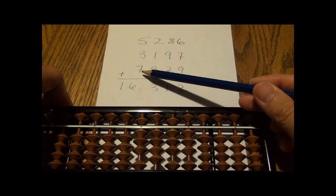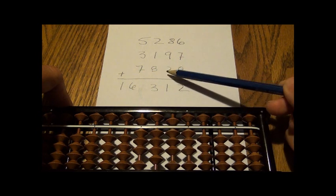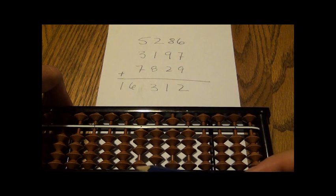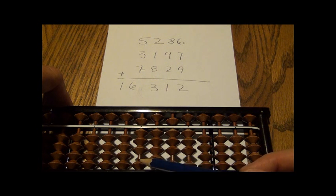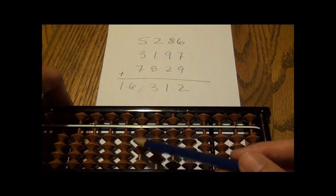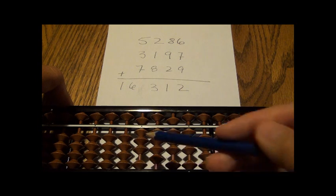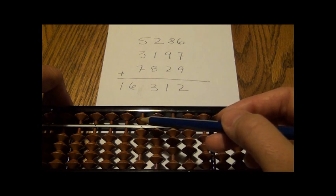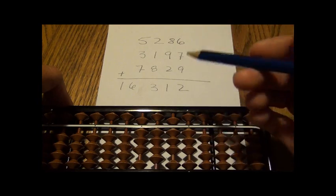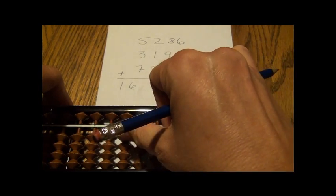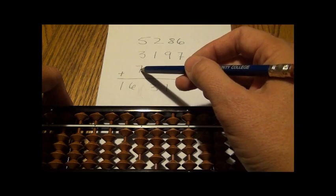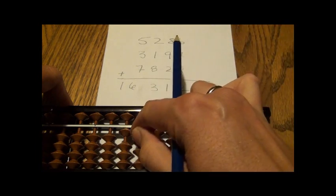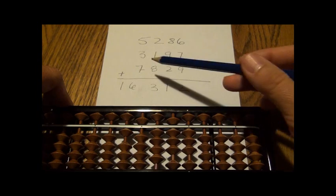Now I'm going to add this last number here, 7,829. Here is my thousands digit. I don't have enough to add seven. I've already got eight there. So I do my tens complement again. I add ten and then what's the tens complement of seven? Three. So I add ten and subtract three. So I've taken care of that.